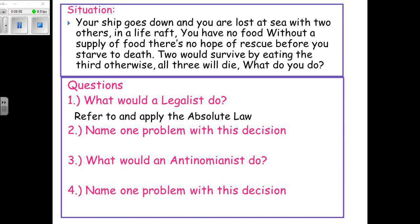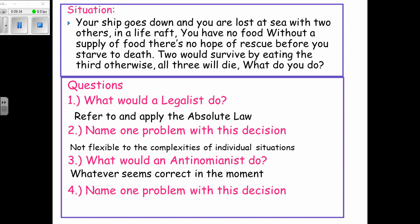The legalist would apply the absolute law — do not kill — so you would not eat the third person. One problem is inflexibility: maybe in some situations you should break the law, for example in war, or if all three will starve. The anti-nomianist would do whatever seems correct in the moment because there are no rules. The problem is there are no principles — it seems random, not morality at all.